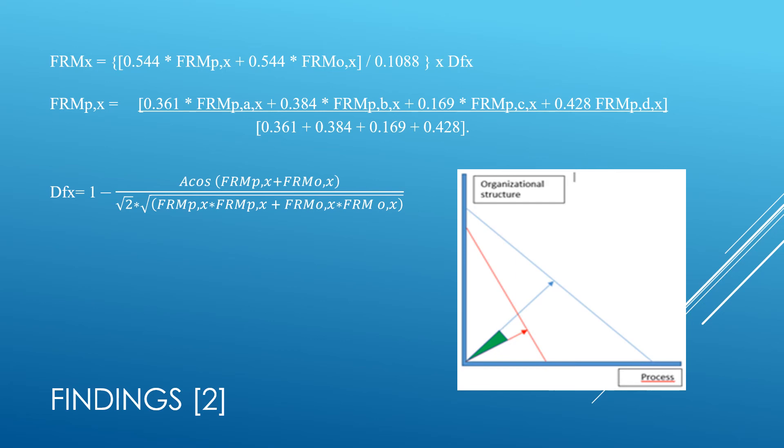Next, the smaller the green angle, the closer the adjustment factor to one, and thus the higher the overall financial risk management score.